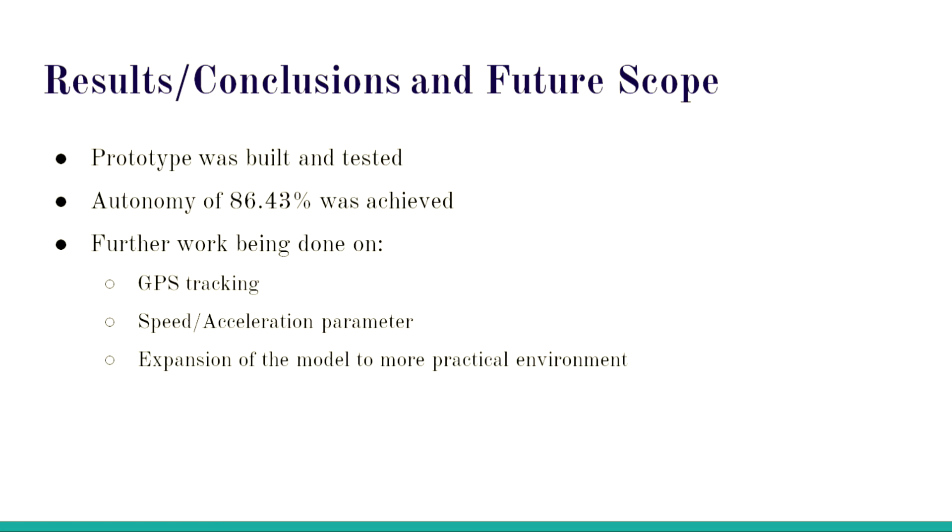These are the results that we achieved. We built the prototype. Autonomy of 86 percent was achieved on the CARLA simulator. This is the basic model that we have built yet. Further work that we are doing on is attaching a GPS sensor, speed acceleration which is the second parameter. This is currently just the steering angle, so speed acceleration parameters are to be added. This model works better in crowded areas or small areas where you can change direction easily, but we are trying to expand it to a more practical situation.